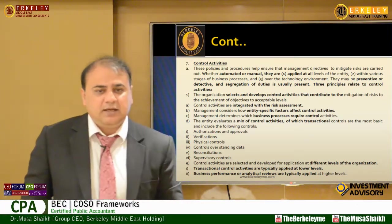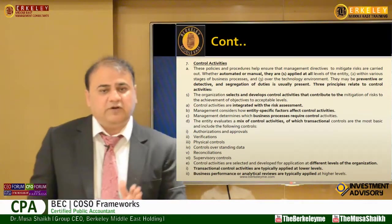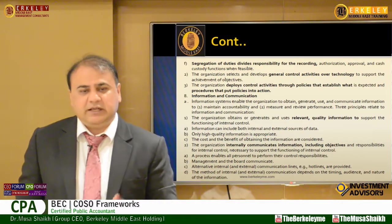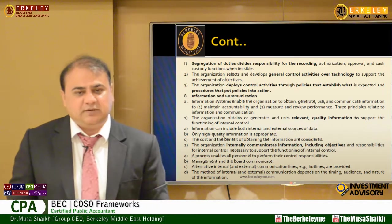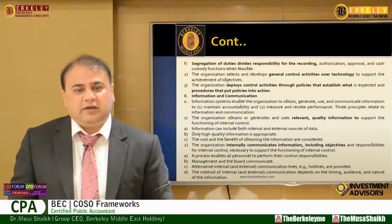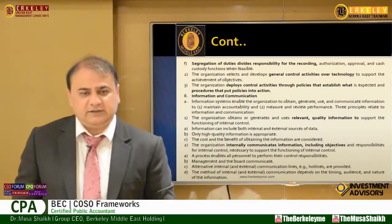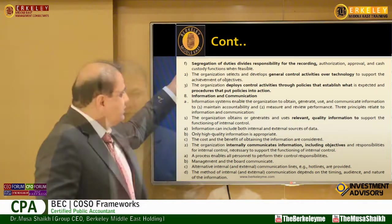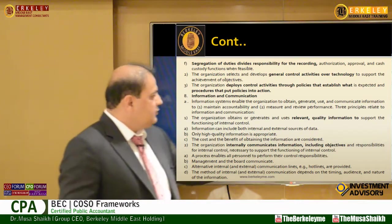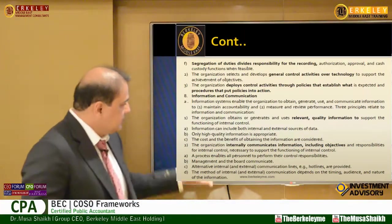Segregation of duties means dividing work among different people. For example, if one person issues a receipt, enters it in the system, makes the deposit, and does the reconciliation — that is a flawed system. We must segregate duties so that if one person commits fraud, we can catch it. We should also put general controls in place and ensure information is relevant, of quality, timely, and adds value to users.